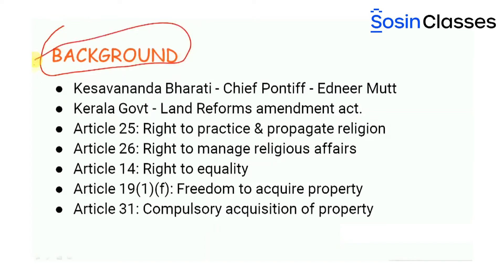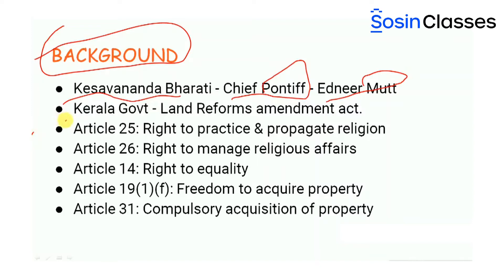His Holiness Keshavananda Bharati was the chief pontiff — that is, the Pope or Pandit — of the Ednir Mutt, a monastic religious institution located in Kassargot district, Kerala. He owned some land in the Mutt. The Kerala state government passed the Land Reforms Amendment Act in 1969, under which the government could acquire some of the lands that belonged to the Mutt.